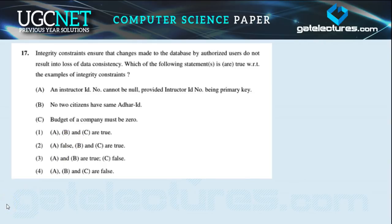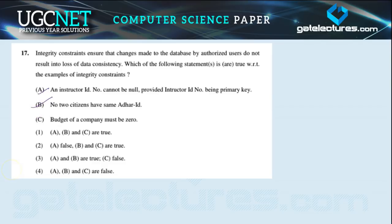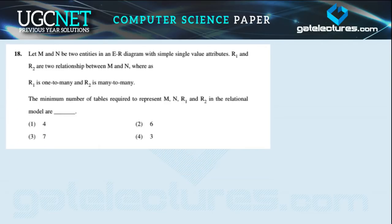Question number 17: integrity constraints ensure that changes made to the database by authorized users do not result in loss of data consistency. Evaluating the statements: an instructor ID cannot be null if it's a primary key — this is true. No two citizens have the same ID — this is also true. Budget of a company must be zero — this is false since a company must have some budget. So A and B are true.